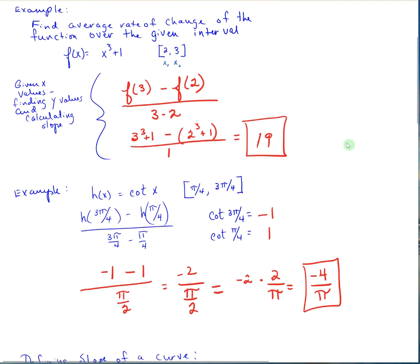In our example, find the average rate of change of the function over the given interval. We have f of x equals x cubed plus 1 over the interval from 2 to 3. We've been given x values and want to find the y values and calculate the slope. So we need f of 3 minus f of 2 over 3 minus 2. Plugging in: 3 cubed plus 1 minus (2 cubed plus 1), put that in parentheses so you don't mess up on signs, over 3 minus 2 which is 1. That equals 19, so that is your average rate of change.